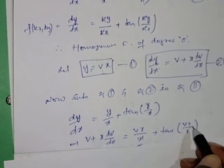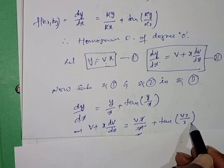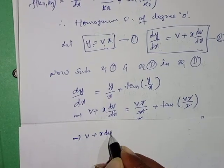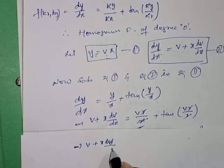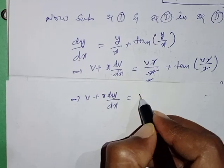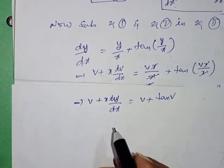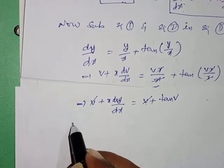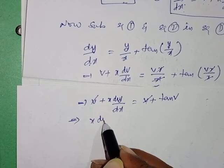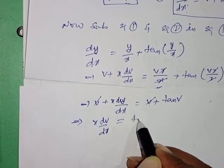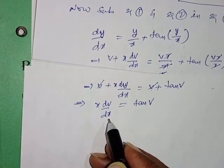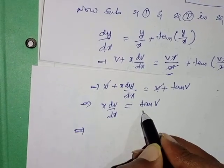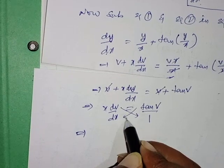The x's cancel, giving v + x·dv/dx = v + tan(v). Observing both sides, v cancels, leaving x·dv/dx = tan(v). Now we apply the variable separable method.